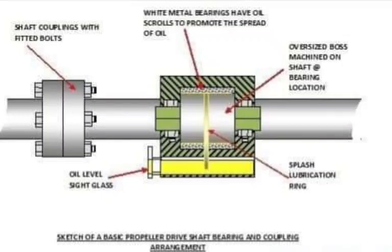After the thrust bearing there is a crankshaft, which is supported by the main bearing. The main bearing and thrust bearing are supported by the main engine bed plate, which is bolted down to the ship's hull. The intermediate shaft bearing is also bolted down to the ship's hull, and the stern tube bearing forms a part of the aft peak bulkhead.